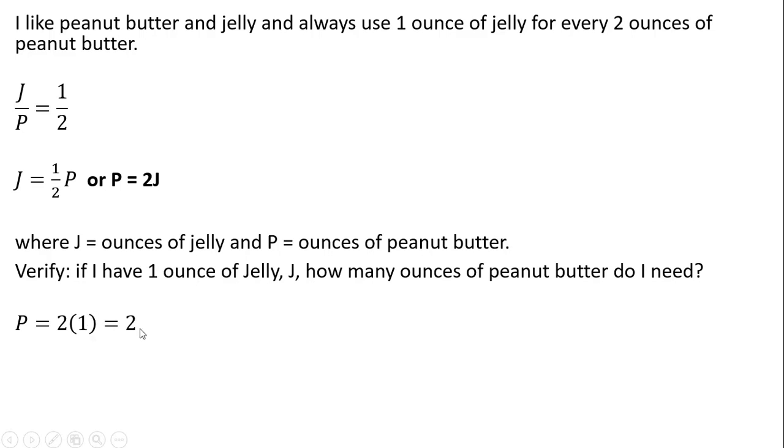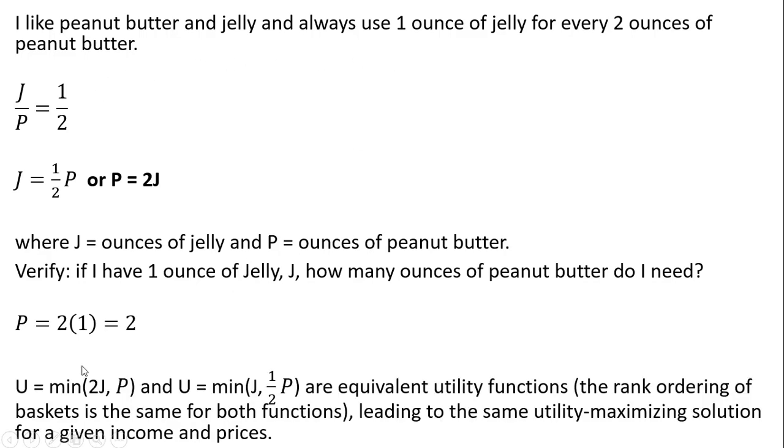So, in this case, we could have constructed our perfect complement's utility function as 2J comma P. Or, as we did in our first way, J comma one-half P.